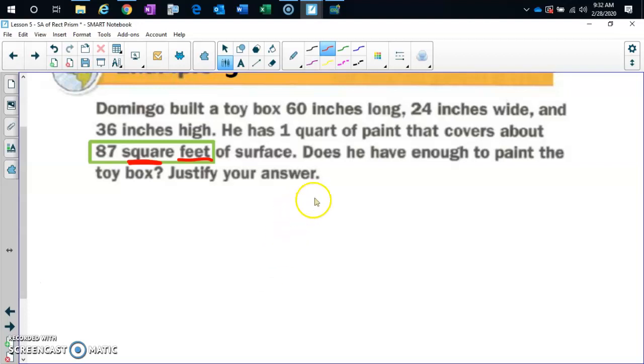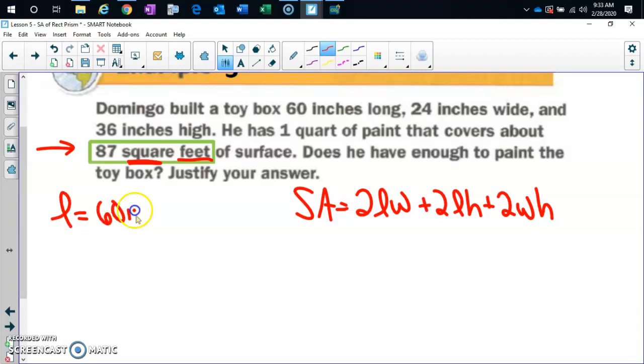So I'm going to write my surface area formula down, and it's a rectangular prism. So 2 length width plus 2 length height plus 2 width height. Guys, make sure you are doing formula, work, answer, label. Now, does anybody notice that the paint covers 87 square feet? But what are our length, width, and height given to us in? Inches. Look, our length is 60 inches, our width is 24 inches, and our height is 36 inches. What's the first thing I need to do to those three things?